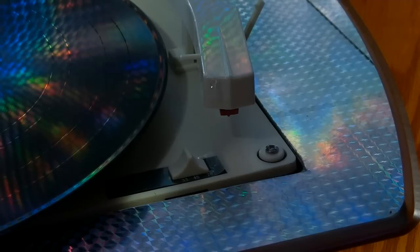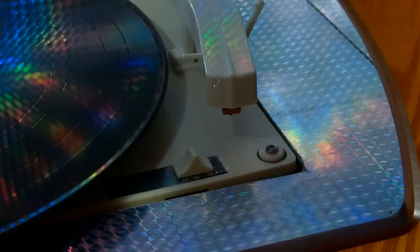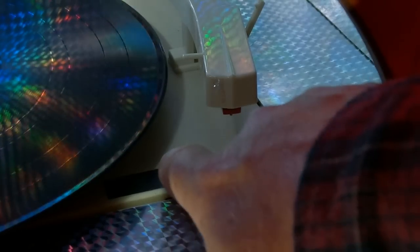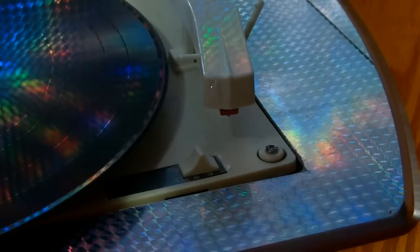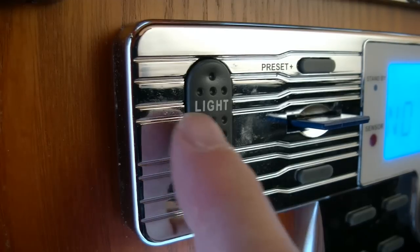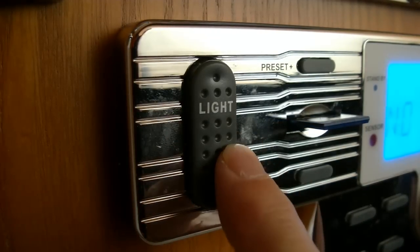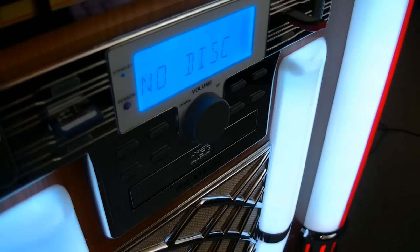Turntable speeds: 33 and a third, 45, and also 78. Jukebox light on and off. CD player.